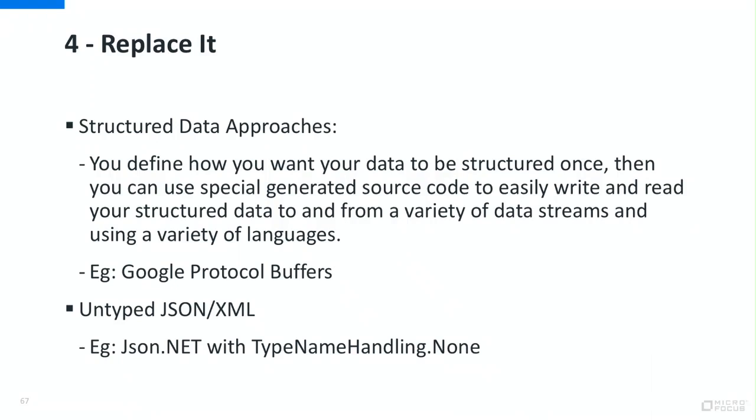The fourth fix approach is to replace the serialization format. Stop using it if you don't need it; sign data if the client doesn't need to change it; use a binder to control what types get deserialized if the client sends data; and if your architecture allows it, change formats that include type discriminators with something else. A good alternative is Google Protocol Buffers, where the client and server agree in advance what they will exchange and share only the data — user name, last name, address — with no type information at all. And if you don't really need type information, just don't use it, which makes JSON and XML serializers safe from this kind of attack.